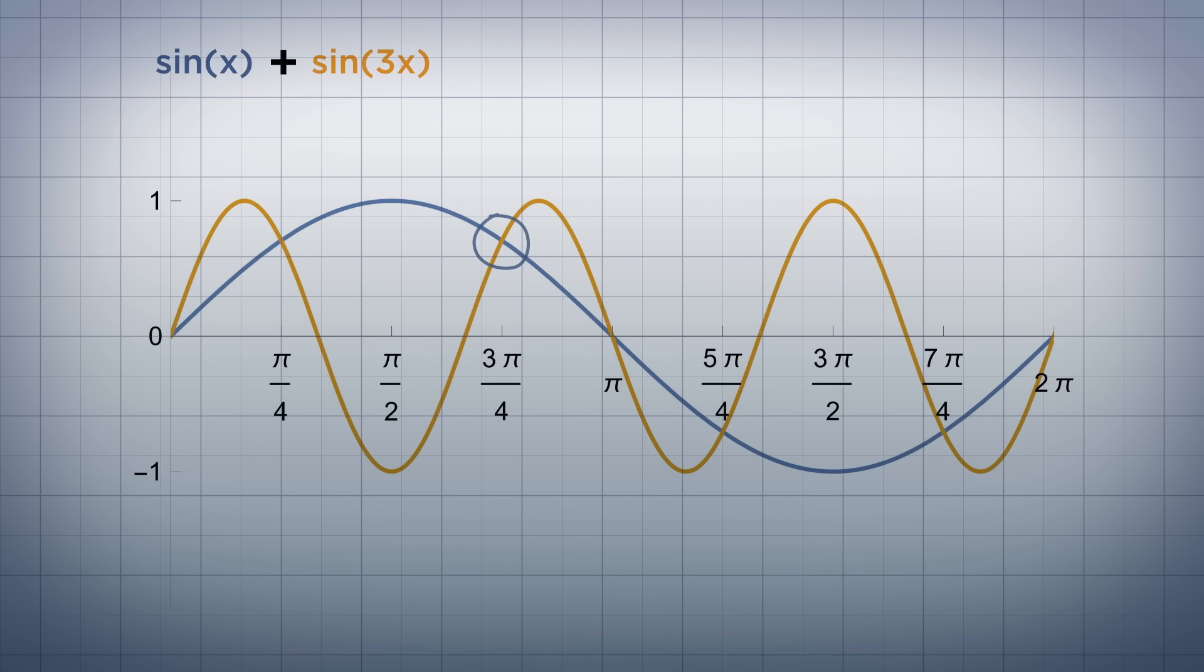For example, at 3π/4, sine x is equal to 1/√2, and sine 3x is also equal to 1/√2, so adding them together gives us √2. At π/2, sine x is 1 and sine 3x is negative 1, so when we add them together, we get 0. If we do that with all the values, this is the resulting graph.